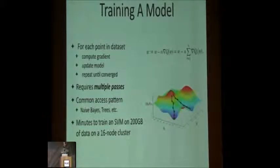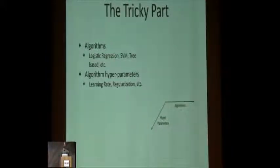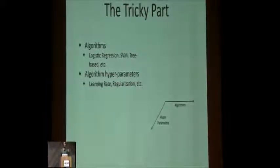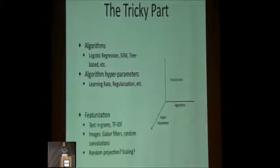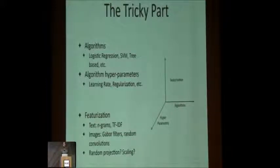You might think this isn't such a big deal, but the problem is you're not just training one model. You're training many, many models. You might be looking at logistic regression, decision trees, random forests, deep learning, whatever you'd like. Each of these algorithms has its own hyperparameters, and beyond that there are different features you want to use. Given your raw data, if you have text you can use ngrams, bag of words, TF-IDF. If you have images, you need to decide what transformations to apply. So this space gets pretty big pretty fast.